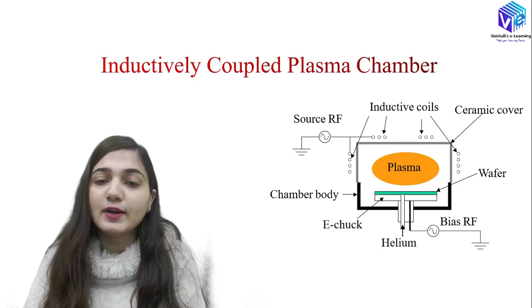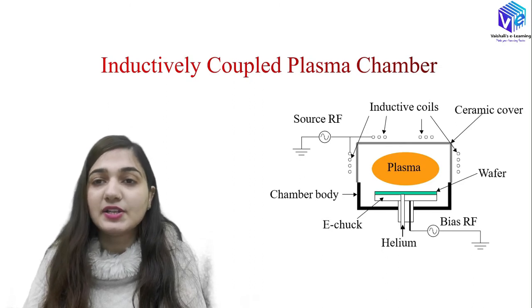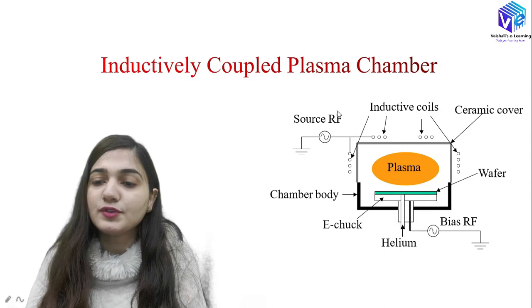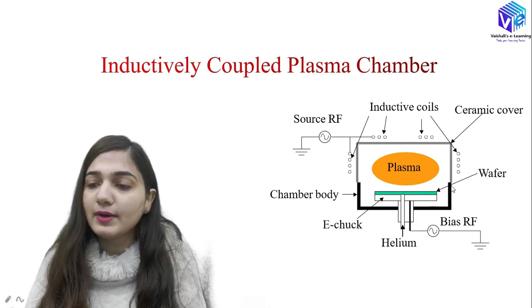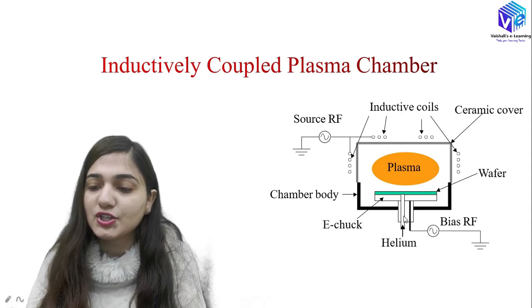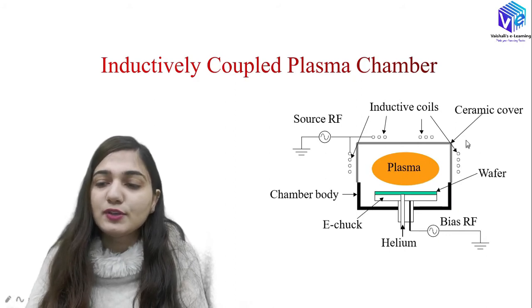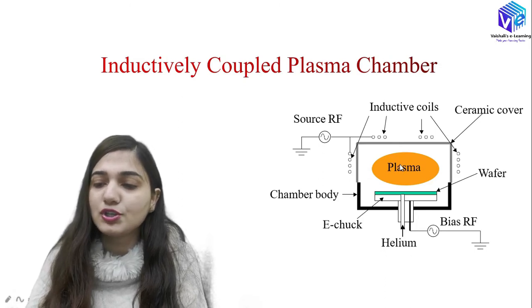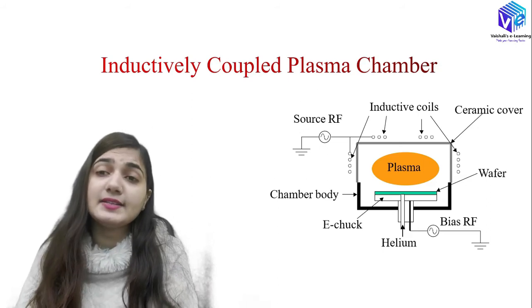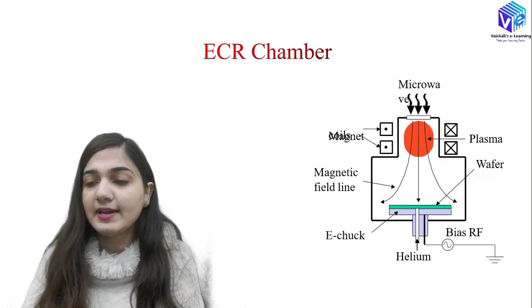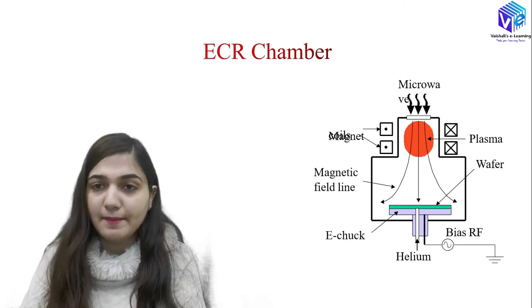This is the chamber called the ICP chamber — inductively coupled plasma chamber. Here we have the inductive coils, which are supplied with power from the source RF. We have the ceramic cover here and the wafer is placed over the electrostatic chuck. Bias RF is sent from the back side of the chuck and helium is supplied from the back side. This is the chamber body, and the chamber is filled with plasma. With the help of these inductive coils and the plasma, we generate high density plasma. This is how the ICP chamber would look.